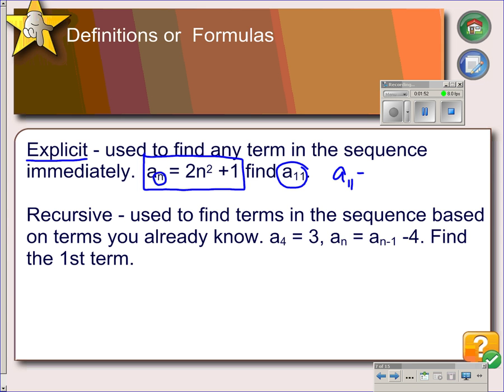So a sub 11 would be 2 times 11 squared plus 1. So 11 squared is 121, times 2 is 242, plus 1 is 243. The explicit formula is very good for finding any particular term in the sequence immediately.